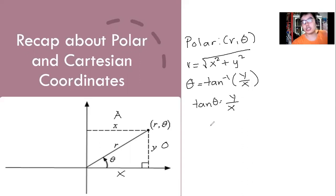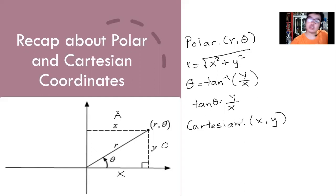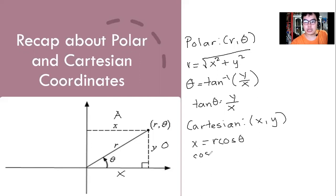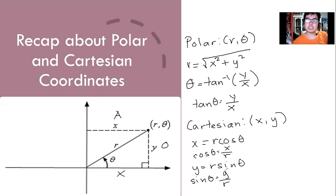For Cartesian coordinates, we have x and y. Using the polar coordinates, what we're going to do is multiply r with cosine theta to find x — since cosine theta means x over r. Meanwhile for y, we multiply r with sine theta, since sine theta is y over r. These are based on the SOHCAHTOA concept. So now we're going to apply it in some of our examples.